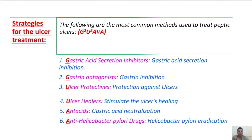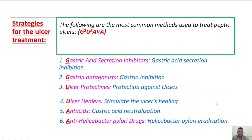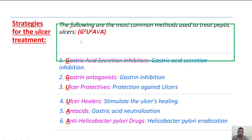Strategies of ulcer treatment: the following are the most common methods used to treat peptic ulcer. Here I have given one mnemonic — it is GUAA, a fruit used to treat ulcer. All are capital letters but the bold ones are G, U, A, and A. We are going to discuss each one by one.